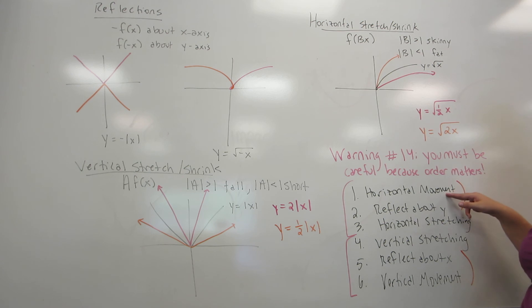But the first thing is horizontal movement, horizontal reflecting, which actually is reflection about y, horizontal stretching. Get all the horizontal things done first, then we do the vertical things. Vertical stretching, reflect about x, and vertical movement. Notice, horizontal and vertical are separated, and they also are in reverse order of each other for the type of movement.